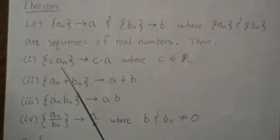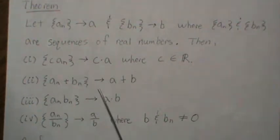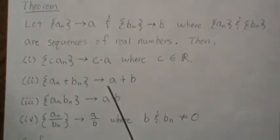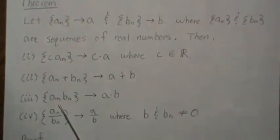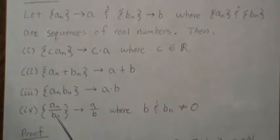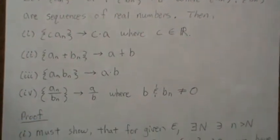If we take c times a — another real number — times this sequence, then it converges to c times A. We can add convergent sequences and they converge to A plus B. We can multiply convergent sequences, and we can divide by convergent sequences. Here, of course, Bn and B can never be zero. So let's just start in.